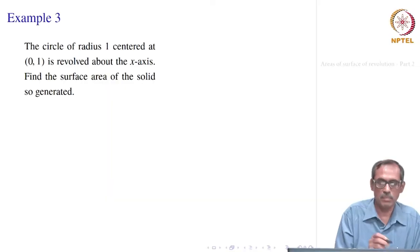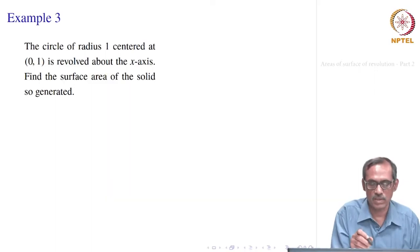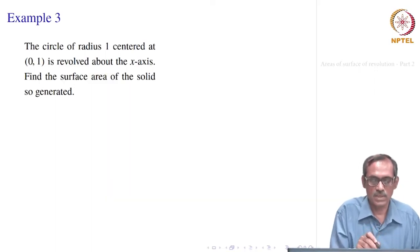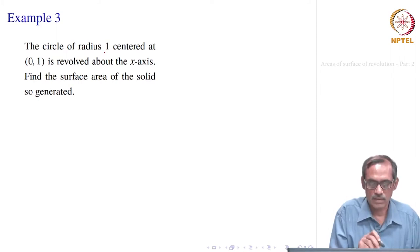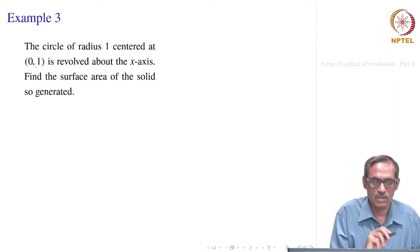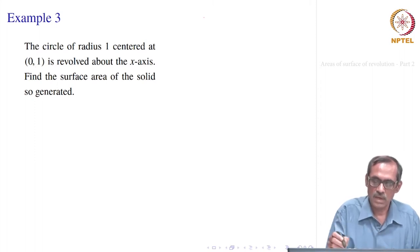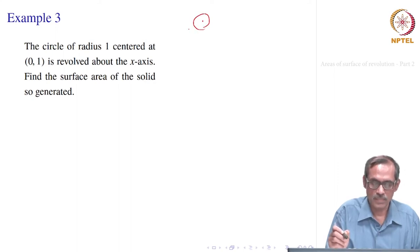Now, if that is given in parametric form, we consider this example. We have a circle of radius 1, centered at (0, 1). That circle is revolved about the x-axis.